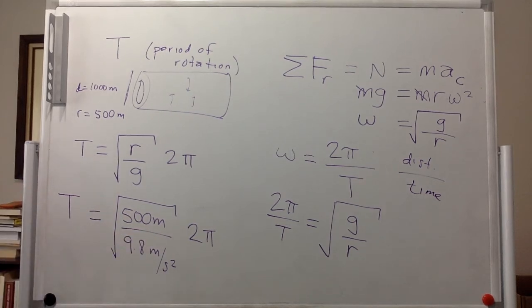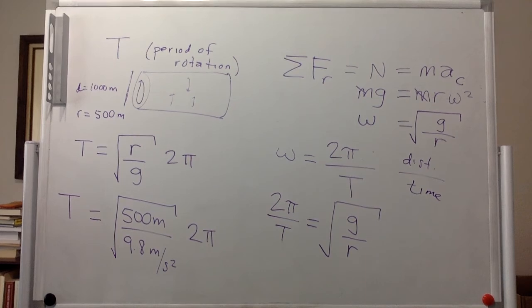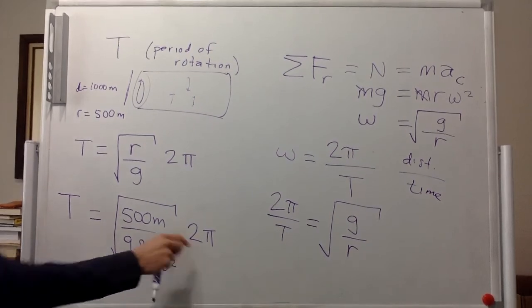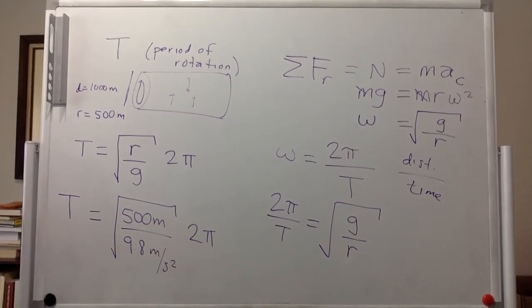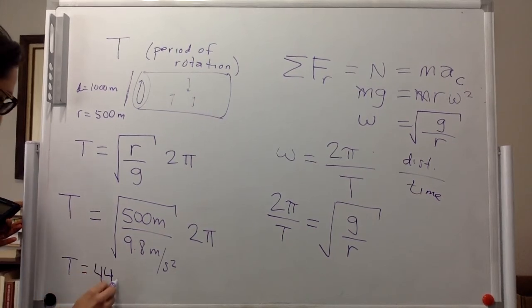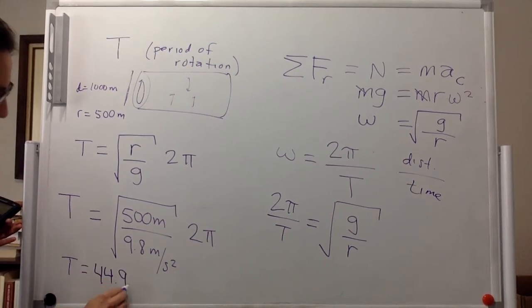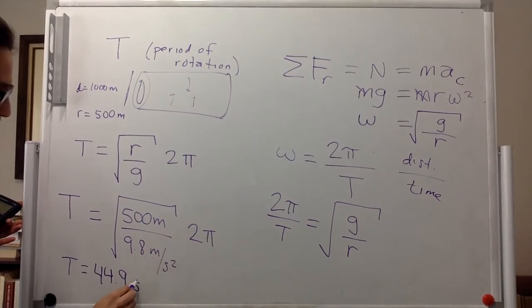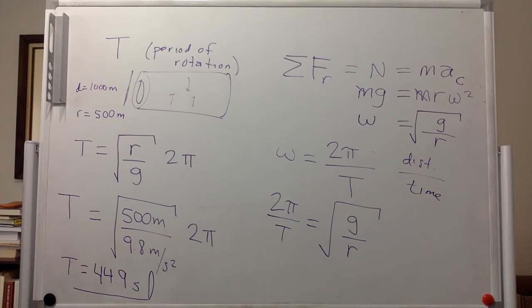So 500 divided by 9.8 is 51. And then we take the square root of that, 7.14. And then we multiply times 2 pi. And so we get that the period is 44.9 seconds. That's our unit. And that is the answer that we were looking for.